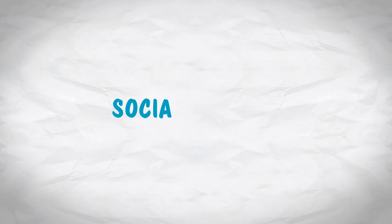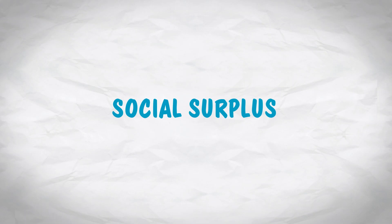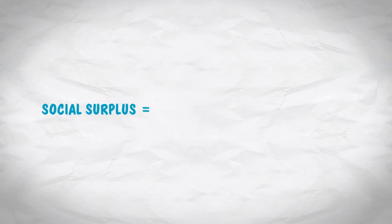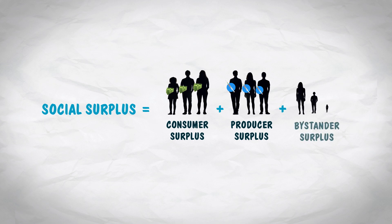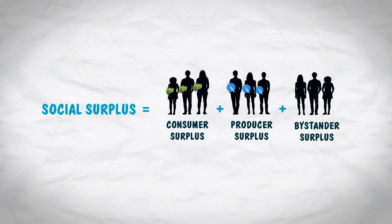But still, there's a problem. Let's step back for a moment and consider some analysis. The term social surplus refers to the total net value created, namely the sum of consumer surplus, producer surplus, and bystander surplus. Similar to what we saw with negative externalities, a market with positive externalities is not maximizing social surplus. Why not?